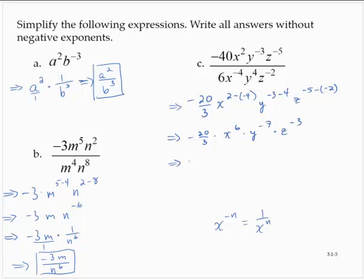Rewriting things with positive exponents, I'd have negative 20 thirds, I would have an x to the sixth. I don't think of that x to the sixth as being an x to the sixth over 1. I have that y to the negative 7, so that's 1 over y to the seventh, and z to the negative 3 is 1 over z to the third. So simplifying this and writing it as a single fraction, I would have negative 20x to the sixth over 3, y to the seventh, z to the third.